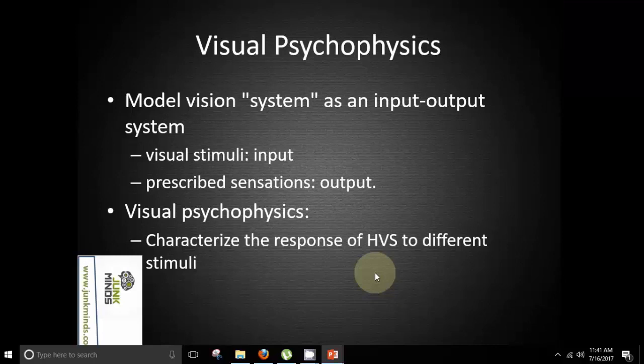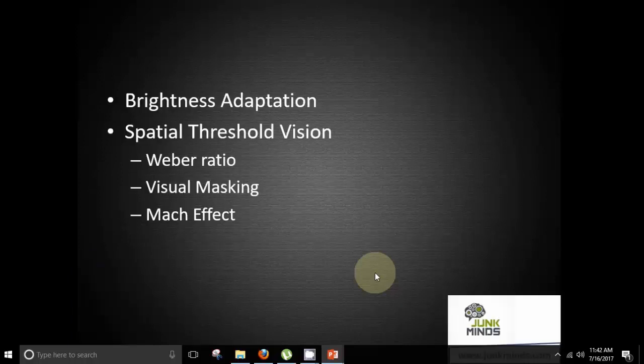Now visual psychophysics. We model vision system as an input output system. Here mainly the input is visual stimuli and the output is prescribed sensation. Visual psychophysics basically characterizes the response of human visual system to different stimuli. We will be learning about brightness adaptation and spatial threshold vision. Under spatial threshold vision we will be studying Weber ratio, visual masking and Mach effect.